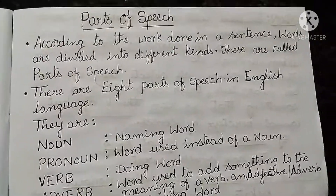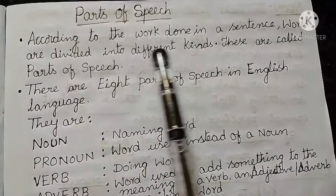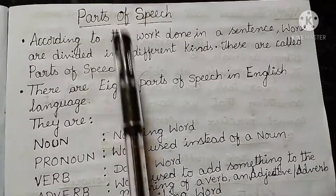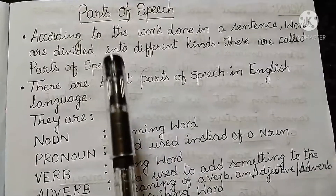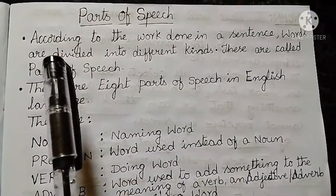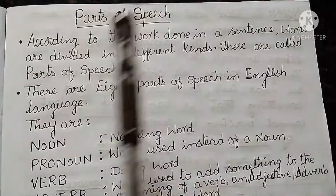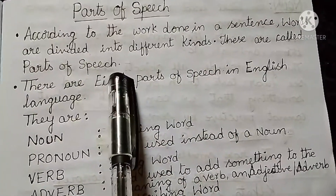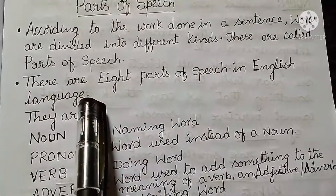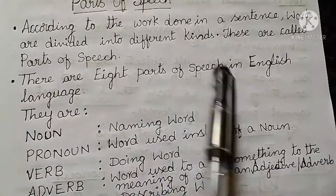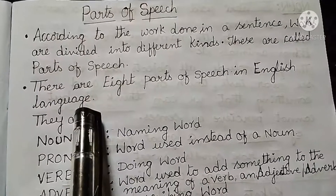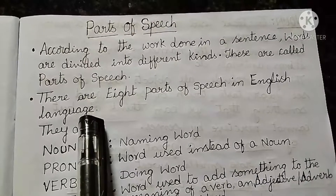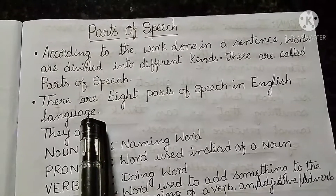According to the work done in a sentence, words are divided into different kinds. These are called the parts of speech. As we have different organs in our body to perform different functions, based on the work done, in a sentence also the words are divided into different kinds. There are 8 parts of speech in English language. The part of speech indicates how the word functions in meaning as well as grammatically within the sentence.